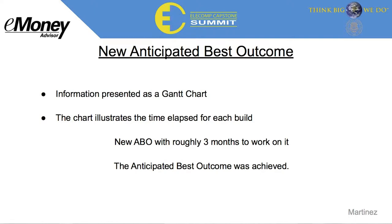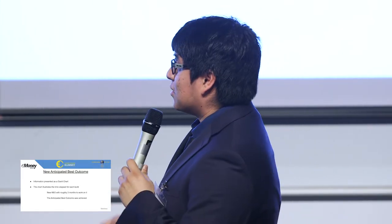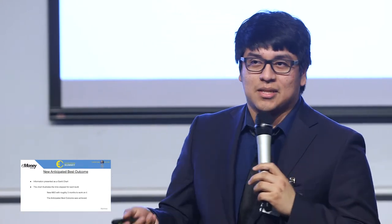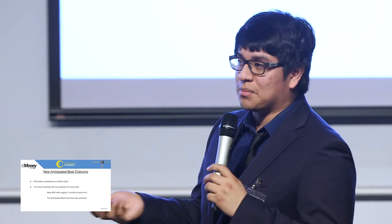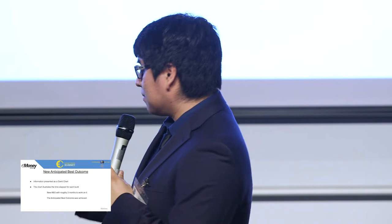With this change came a new best anticipated outcome: to present information visually, since numbers can be boring and unimpactful. Looking at pictures is a lot easier, and that's what a Gantt chart does — it displays time as a picture. We had roughly three months to work on it, and we are pleased to say we achieved the best anticipated outcome.